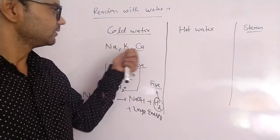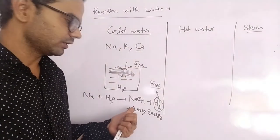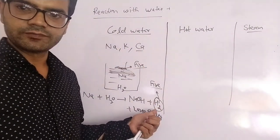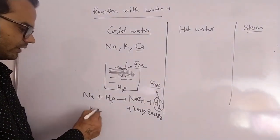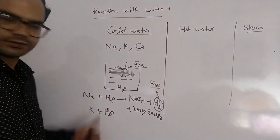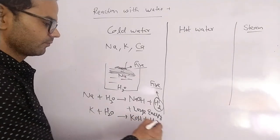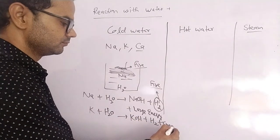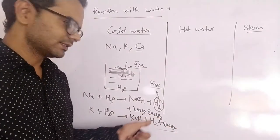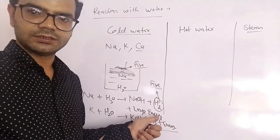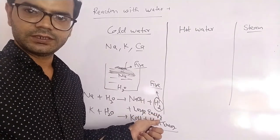Similarly, potassium reacts very rapidly and quickly with cold water, and a large amount of energy is released. The reaction is: potassium plus water gives potassium hydroxide plus hydrogen gas plus energy. Again, this energy is sufficient to ignite the hydrogen, so the hydrogen gas burns and catches fire.